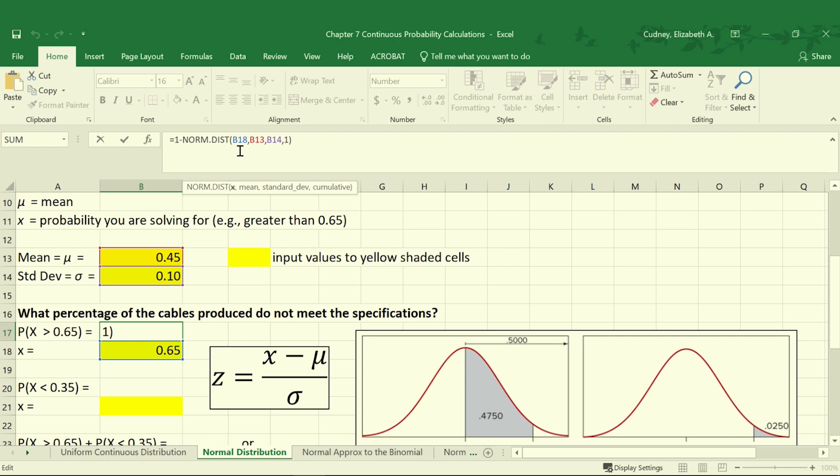Within the NORM.DIST function, we start with our value for x, which is what we're solving for. We have our value of 0.65 in cell B18. Then we're going to use our value for our mean, which is in cell B13. Our standard deviation is in cell B14. And we're looking for the cumulative, because we want the probability it's greater than, so it's anything above that value.